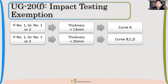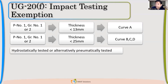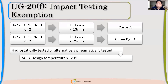What are the conditions under which these exemptions are allowed? First, your vessel should be hydrostatically tested — that is generally the case, so it will be very easily met. Second, it is very important: your design temperature should be between minus 29 to 345 degrees Celsius. If the MDMT is minus 32 or minus 35, I cannot take that exemption — it is only allowed down to minus 29 for P number one material.